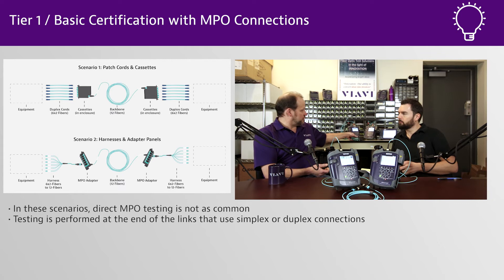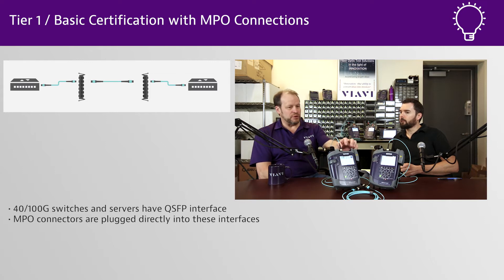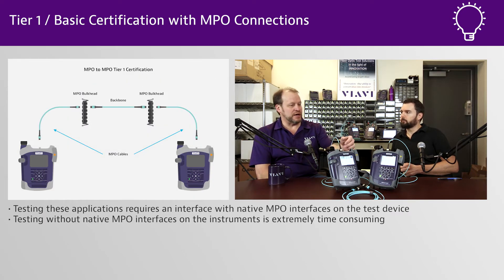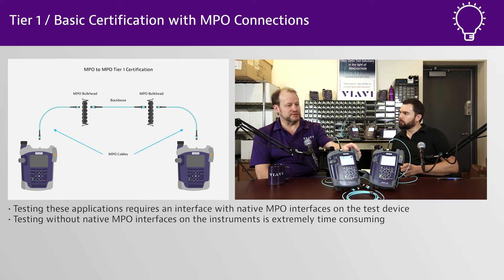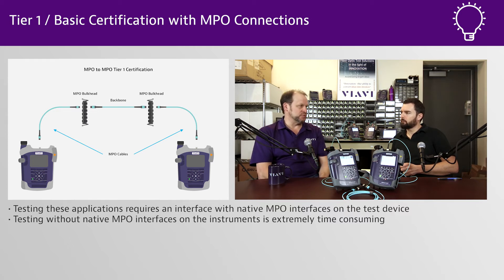Things start to get different when you're running at 40 and 100 gig with multimode, and there are systems like PSM4 for single mode that also run native MPO right into the equipment — whether it's a switch, router, or server. For that, you need native MPO interfaces on your test equipment to test those links and channels. The MPO-LX does your basic or Tier 1 certification — loss, length, and polarity — much the same way as an OLTS on LC links: set reference, set a limit, connect up to the system you're testing, perform the test, and get pass-fail on 12 fibers instead of two.